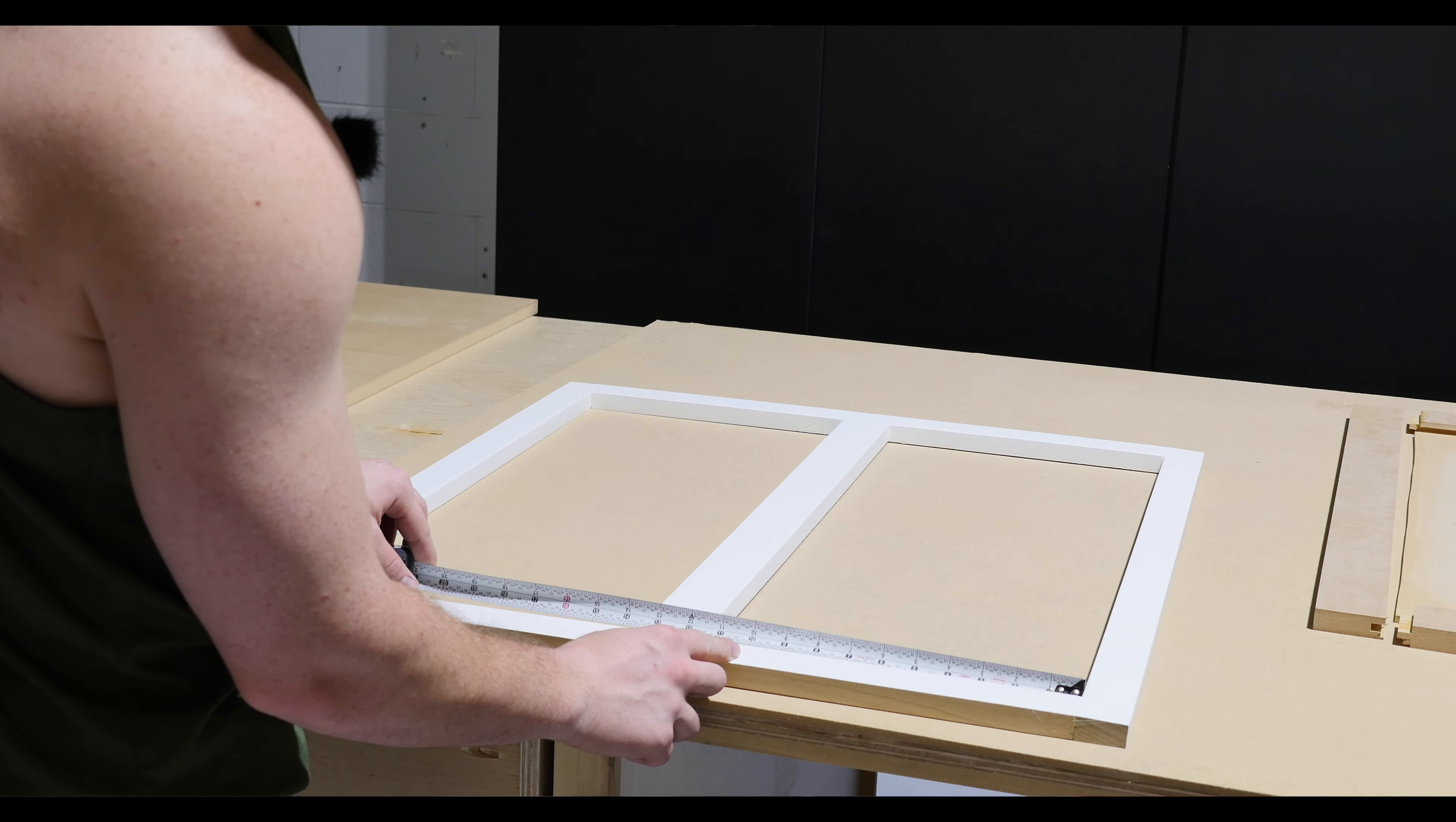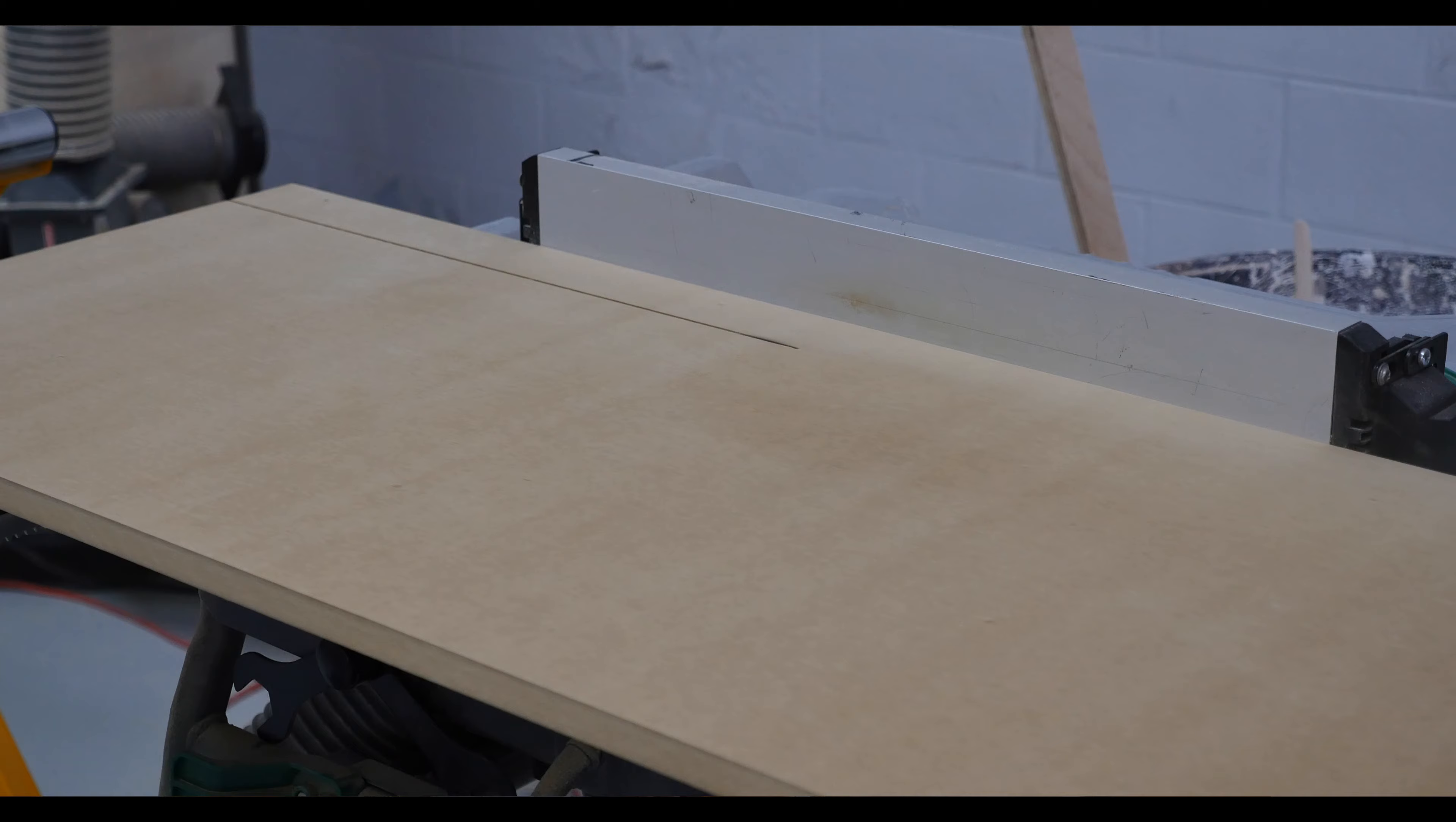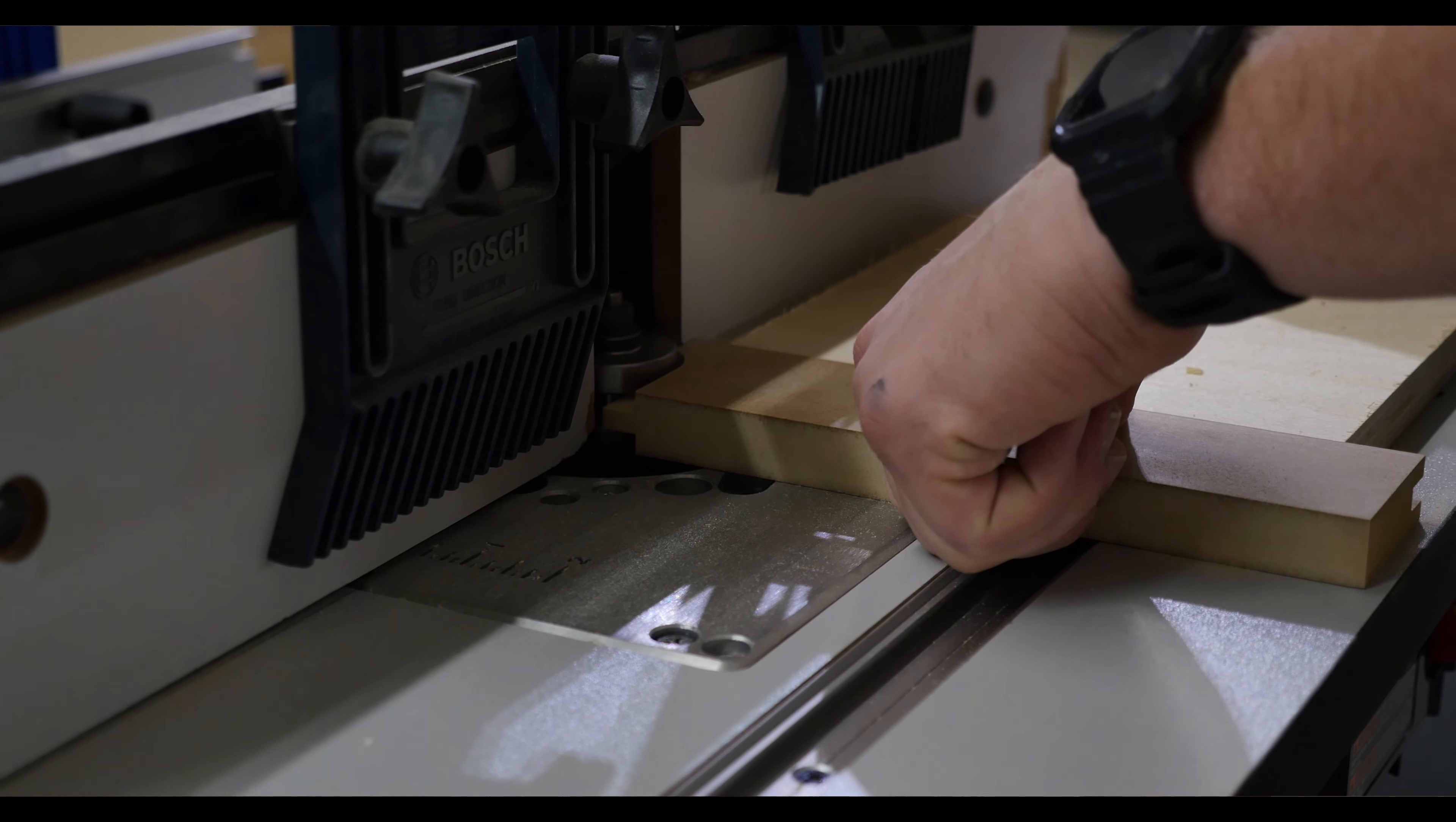Now the steps for today are pretty simple. First thing we're gonna do is measure the opening, see how big the door needs to be. We will then create a material list. Once we have our material list, we'll go to the table saw, we'll rip out our rails and styles. Once they're ripped out, we'll sand them. Once they're sanded, we'll go over to the router tables and we will route a groove on both the rails and styles. Once that's done, we will route a tongue on just the rails.